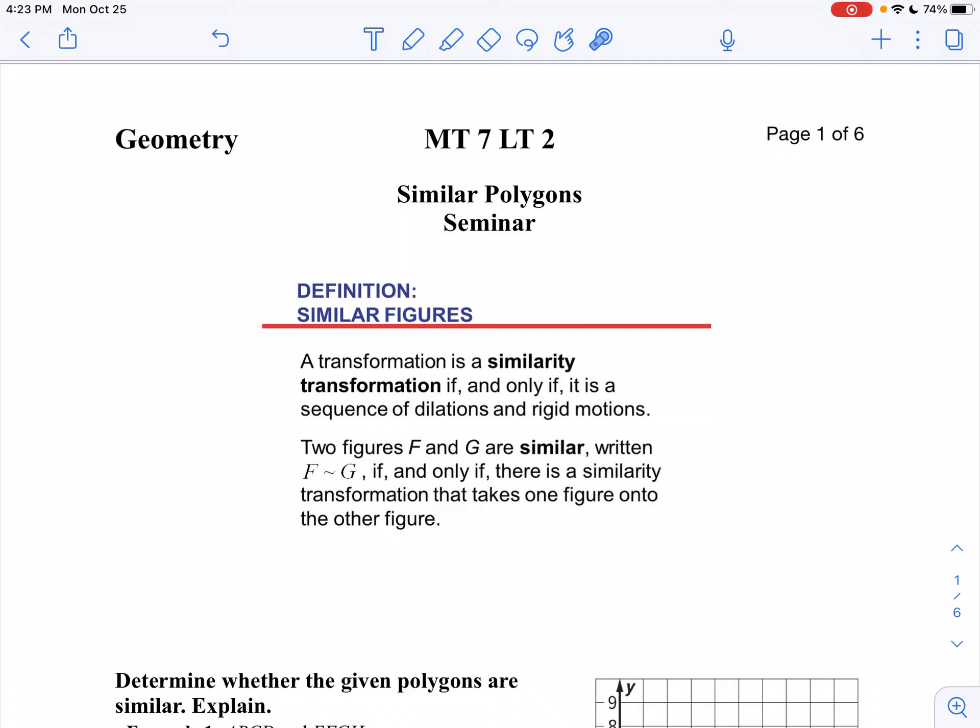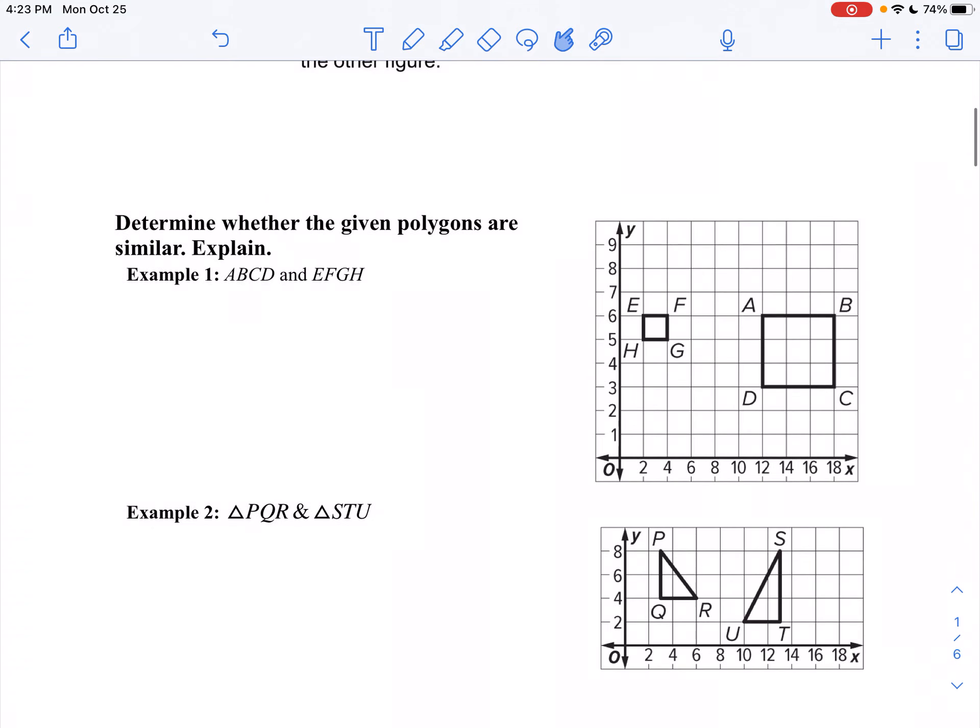Further, two figures F and G are similar, written as F tilde G. If and only if, there's a similarity transformation that takes one figure into another figure.